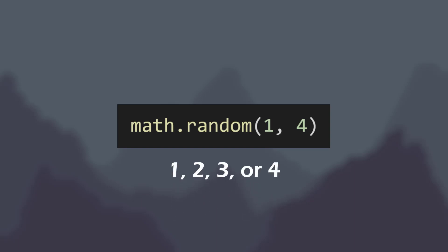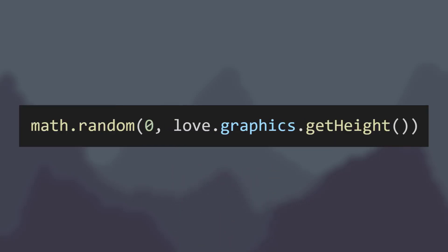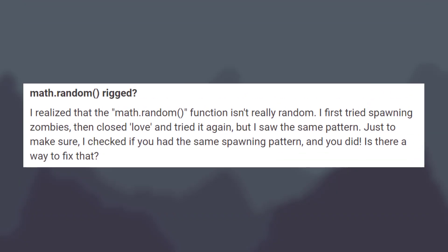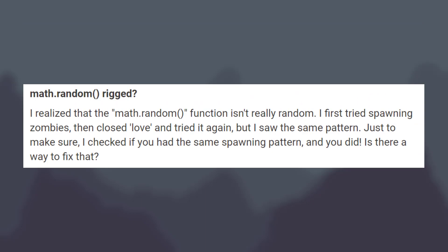Then, depending on which side it gives me, I can randomly choose some pixel along that border by just passing in different parameters. And this works great. But this is where the question-asker's concern comes into play — they noticed that each time they started the game, they saw the same pattern in how the zombies were spawning. In fact, it was the same pattern that I was demonstrating in my video.